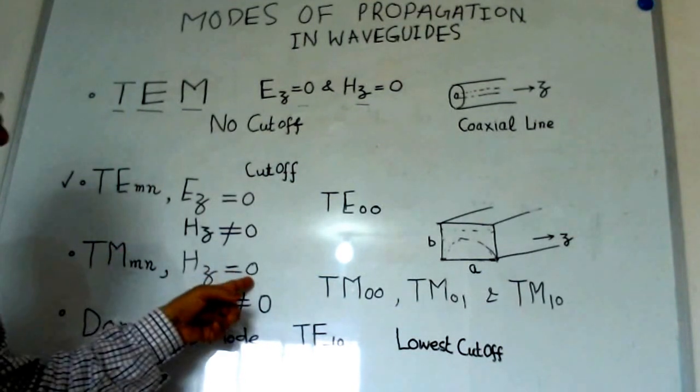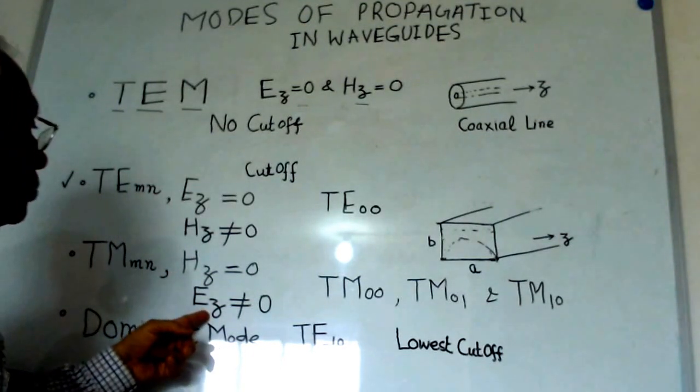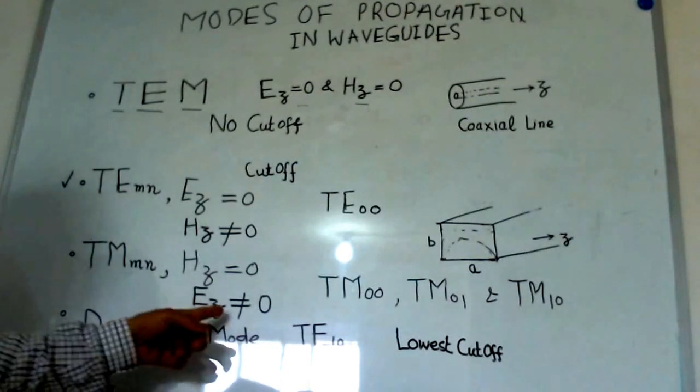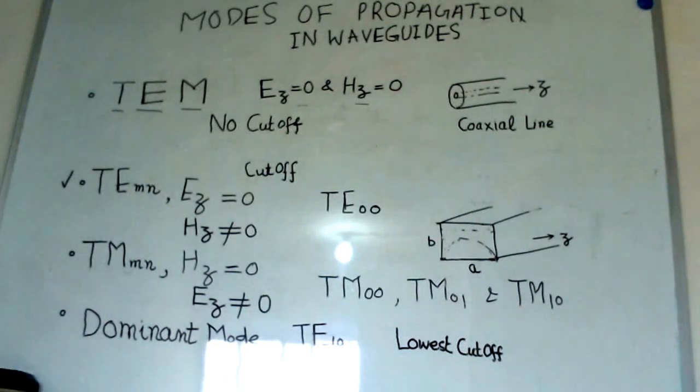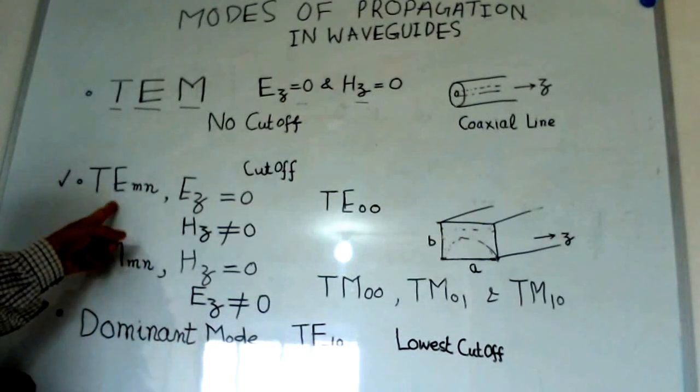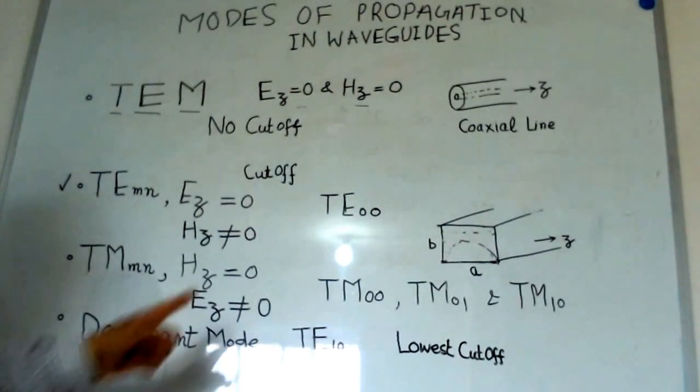But that does not say the Ez component would be zero. That is why we indicate that Ez is a non-zero component in such a waveguide. That means there are two kinds of modes. One is TE and the other is TM mode.